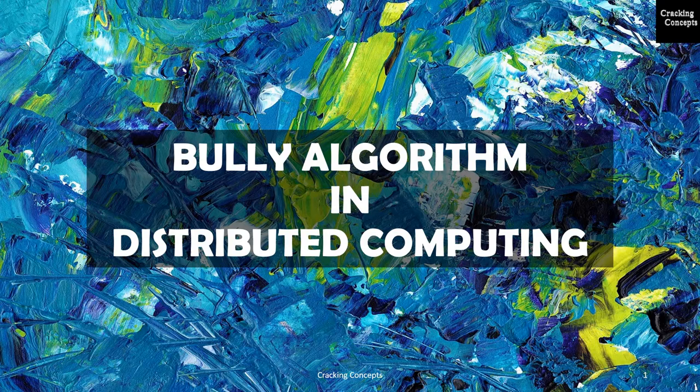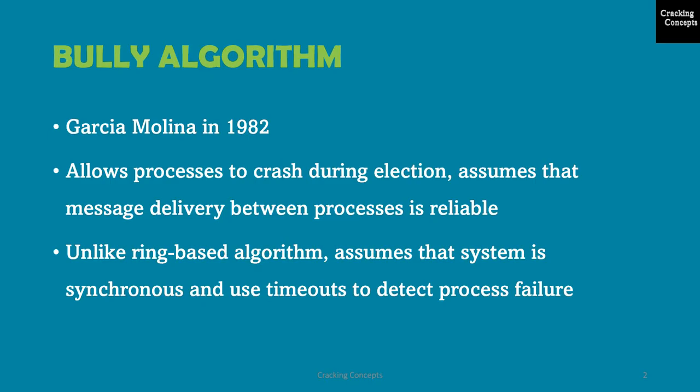Hello all, welcome to this video on distributed computing. Today I'll be talking about the Bully algorithm. The Bully algorithm was proposed by Garcia Molina in 1982. It allows processes to crash during an election, although it assumes that message delivery between processes is reliable.